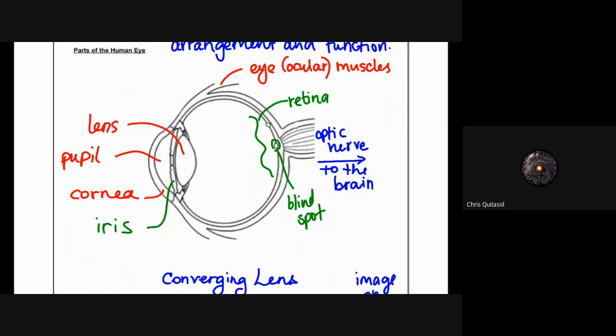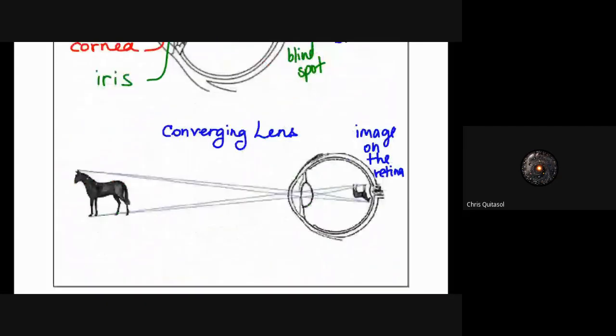The lens, retina, optic nerve, iris, cornea, pupil - all of those are important structures with which light information is taken in and translated and transferred via the optic nerve to the brain. When we think of the human eye, we have to understand that it is a converging lens.